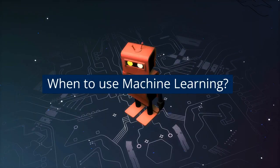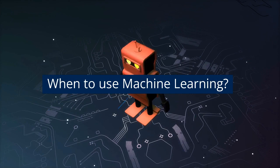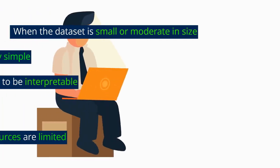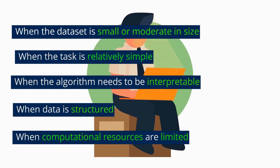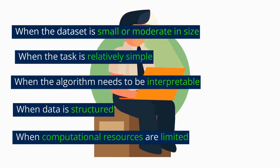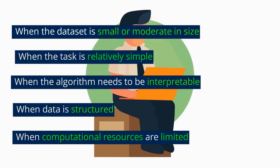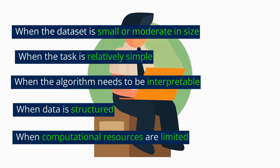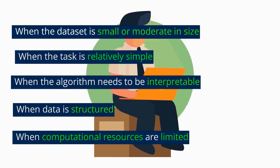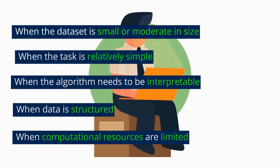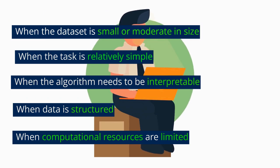With these differences in mind, when should we use machine learning over deep learning? When working with a smaller dataset, machine learning algorithms are a better choice, as deep learning algorithms often require large amounts of labeled data for training and may not perform as well with smaller datasets. When the task is relatively simple, machine learning is also an appropriate choice, as deep learning may be overkill for simple tasks.